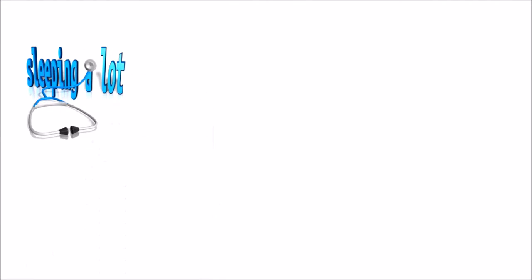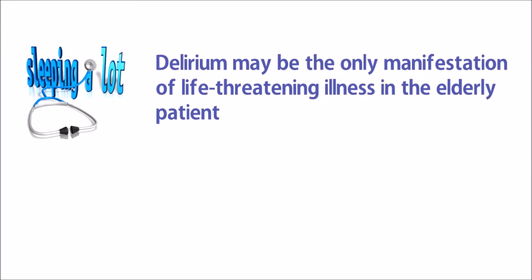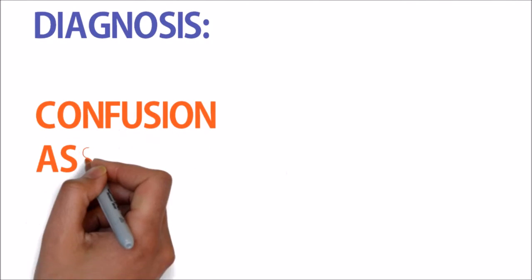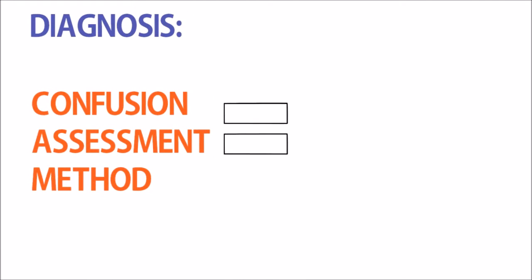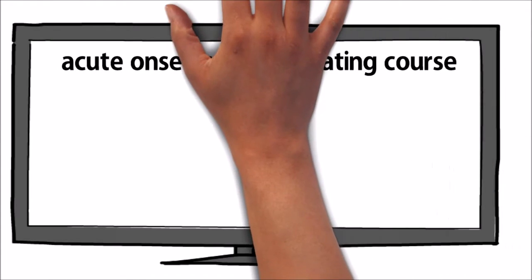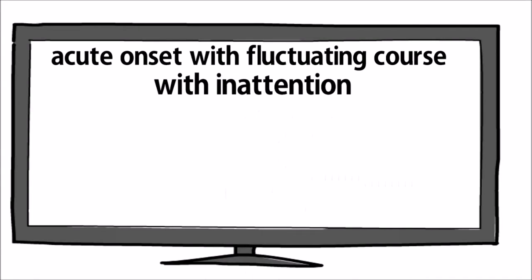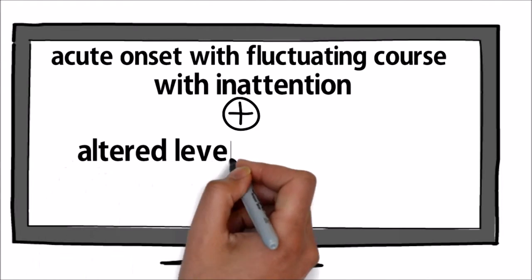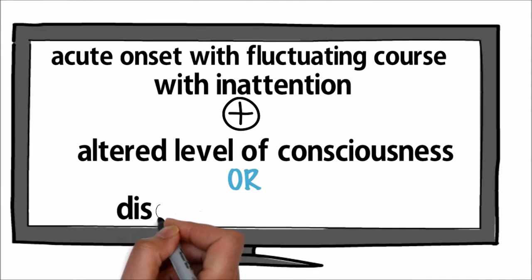As elderly patients present with atypical presentation, remember that delirium may be the only manifestation of life-threatening illness in elderly patients. Diagnosis of delirium can be made using the Confusion Assessment Method tool, which requires acute onset with fluctuating course, inattention, together with altered level of consciousness or disorganized thinking.